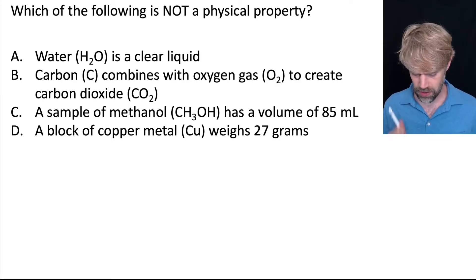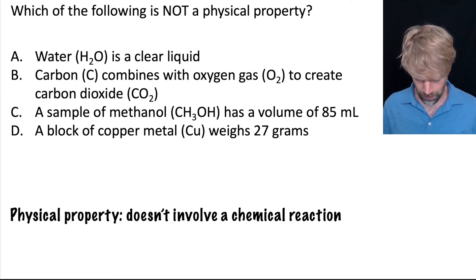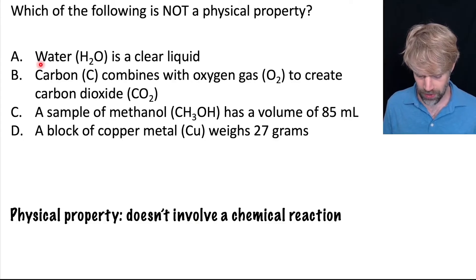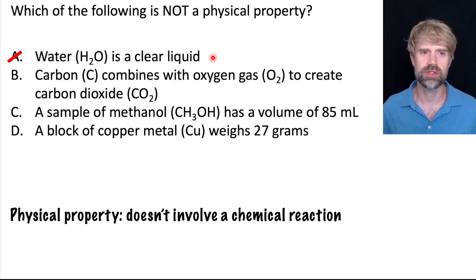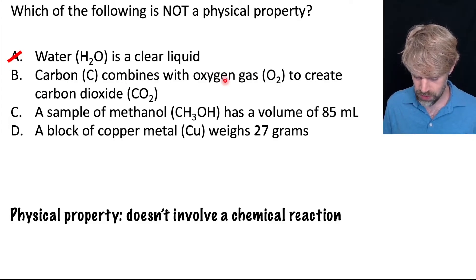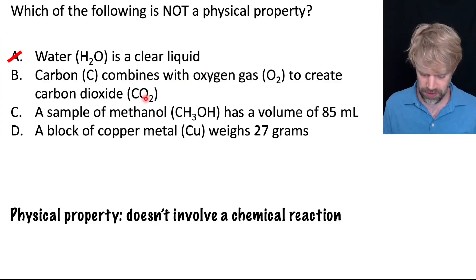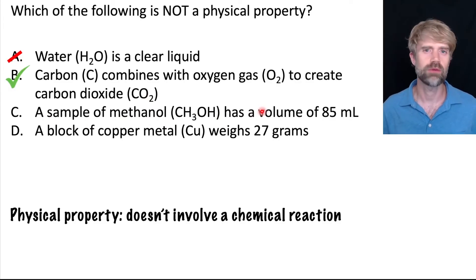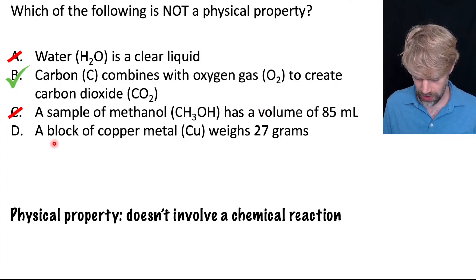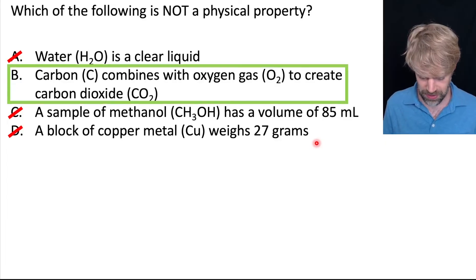Which of the following is not a physical property? Remember, a physical property doesn't involve a chemical reaction. A: water is a clear liquid — that's just how it looks. Definitely physical. B: carbon combines with oxygen gas to create carbon dioxide — sounds like we're talking about making something new. I bet this one is our chemical property. C: methanol has a volume — volume, the amount of space something takes up, that's physical; we're not making anything new. D: a block of copper metal weighs 27 grams — definitely physical, not making anything new. So B is the one example that is not a physical property.